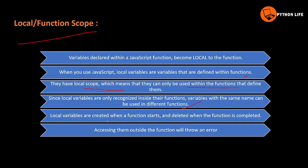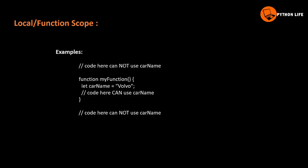Local variables are created when a function starts and deleted when the function is completed. Accessing them outside the function will throw an error. For example, we have a function `myFunction`, inside which `let carName = value`. The variable carName cannot be accessed outside the function. Let's show you an example.